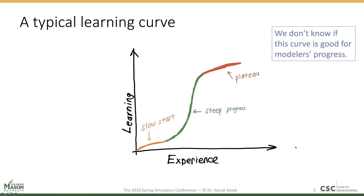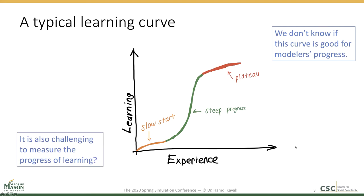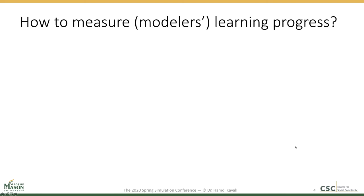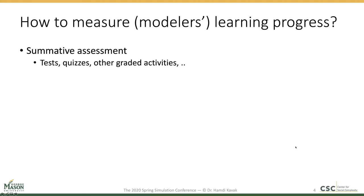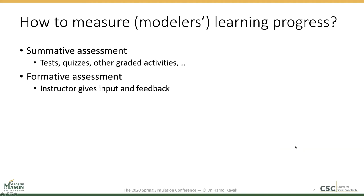The challenge is that we don't know if this learning curve is good for understanding the modeler's learning progress. It is also challenging to measure the learner's state on the y-axis. There are two main approaches to measure learning progress. The first is summative assessments, like tests, quizzes, and graded assignments, which yield a grade indicating learning progress. The other is formative assessment, where an instructor gives input and feedback to the learner to improve learning. Although somewhat subjective, we can still associate informal feedback with some sort of learning progress.